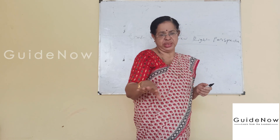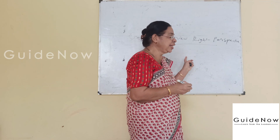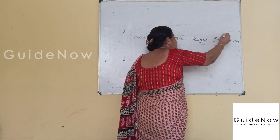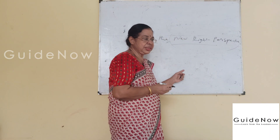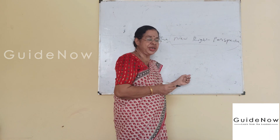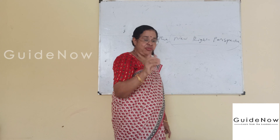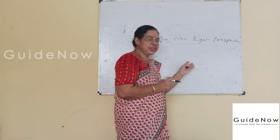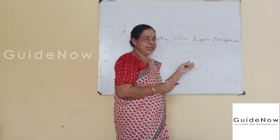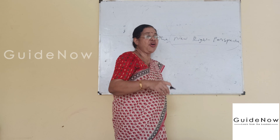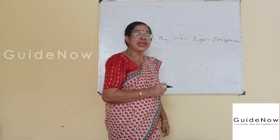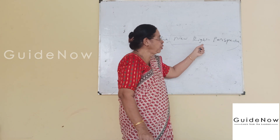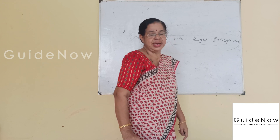Otherwise, he cannot choose here. This is known as government in the New Right perspective — a particular strategy introduced by the individual which is affordable. That is the best strategy adopted by him. Based on this important technique, four important assumptions are introduced. There is a new important concept with four important assumptions.